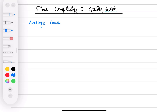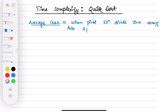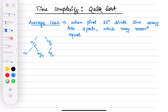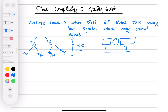The average case for quicksort is when the pivot element divides the array into two parts which may not necessarily be equal. If they are equal it becomes the best case, because at every iteration it will take n/2, n/2, then n/4, n/4 like this. But if the partition gives two elements on one side, pivot here, and three elements on the other side, this is the average case — whereas in the best case you have exactly equal elements on both sides.